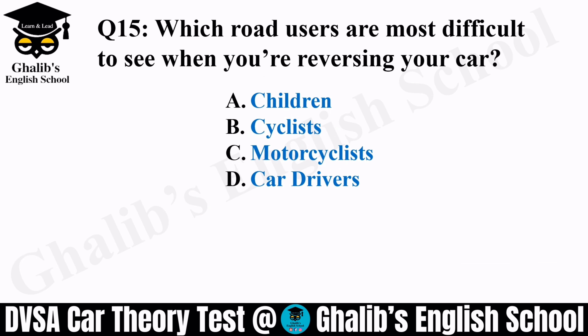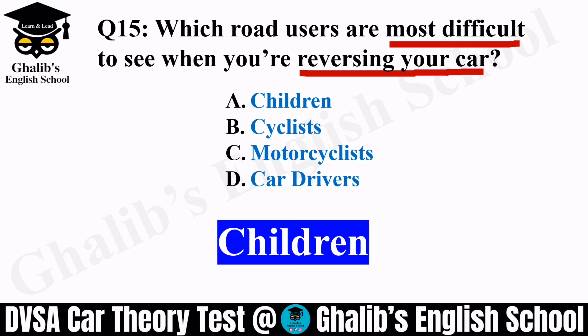Question 15. Which road users are most difficult to see while you are reversing your car? When we drive forward we can see all hazards, but when reversing we need to check carefully at the back. Options: children, cyclists, motorcyclists, or car drivers. The answer is children, because they are small and can be hidden behind the car body. We need to check very carefully while reversing.